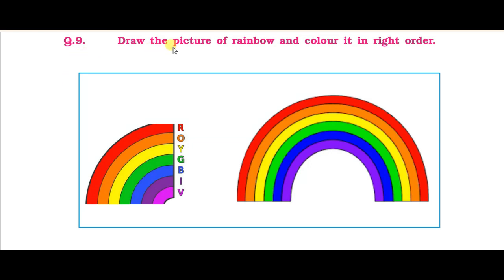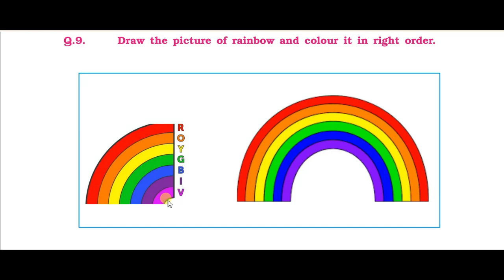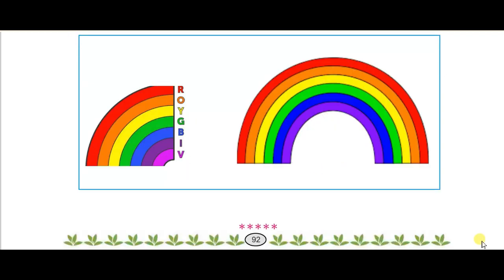Question nine — draw the picture of a rainbow and color it in the right order. Aapne rainbow ki picture banani hai aur usme color karna hai right order mein. The order from bottom to top is: violet, indigo, blue, green, yellow, orange, red. Use all seven colors in the correct order. Note that violet is sometimes missing — make sure to include violet as well.